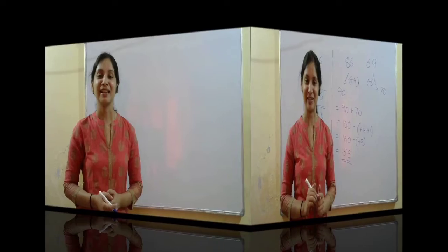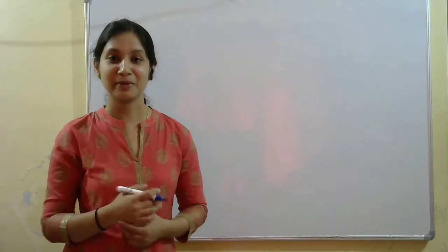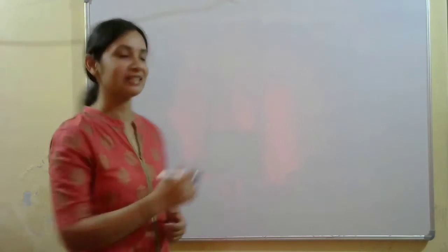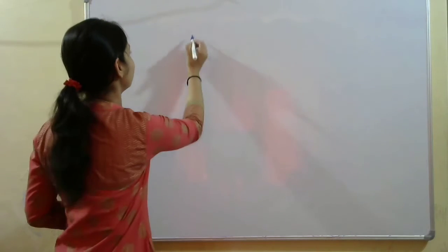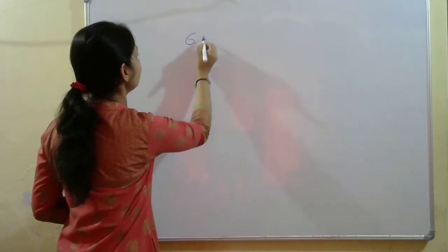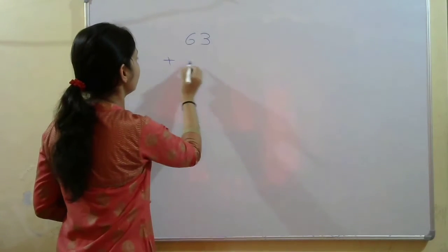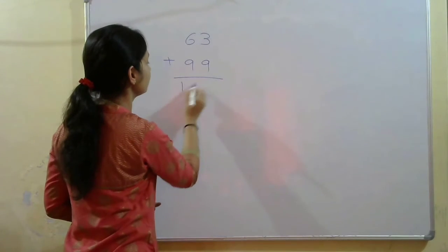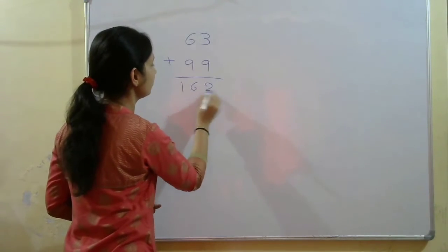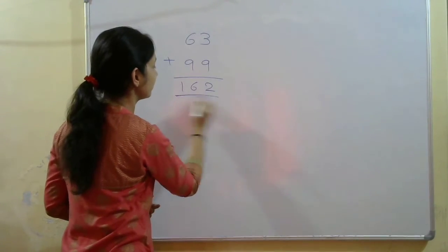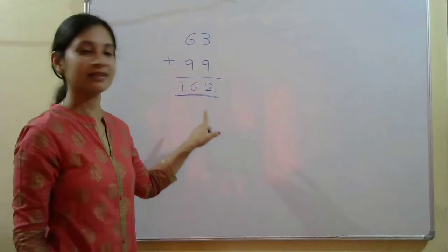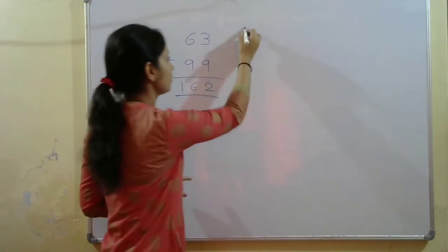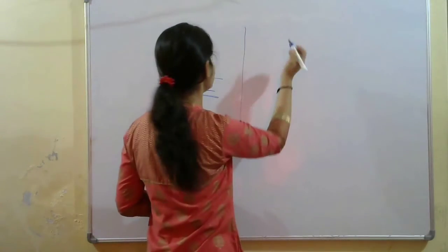Let us go for the last example on this topic: 63 plus 99. Using the conventional method, 63 plus 99 equals 162. Now we are solving using Vedic mathematics tricks.